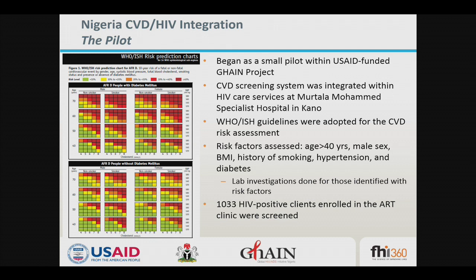In Nigeria, work was conducted in the northern town of Kano at Mutala Muhammad Specialist Hospital. We used the WHO and International Society of Hypertension guidelines for CVD risk assessment, covering both modifiable and non-modifiable risk factors. Non-modifiable factors included age and male sex; modifiable factors included smoking, hypertension, and diabetes. Those identified as high risk were referred for further laboratory investigations. In this pilot, we screened over 1,000 HIV-positive patients, focused only in the ART clinic.